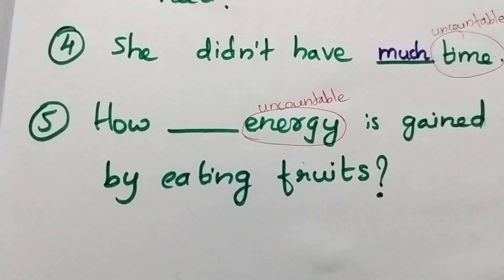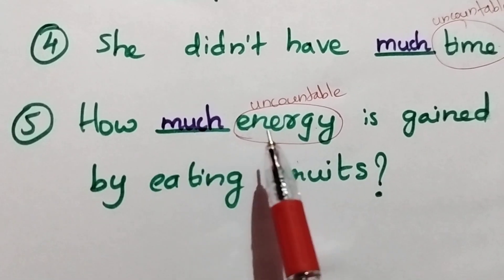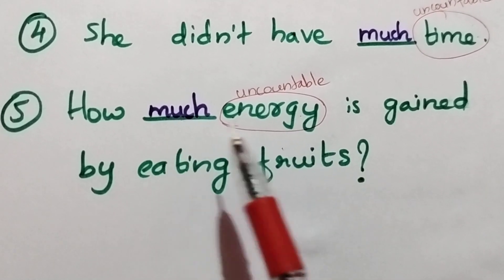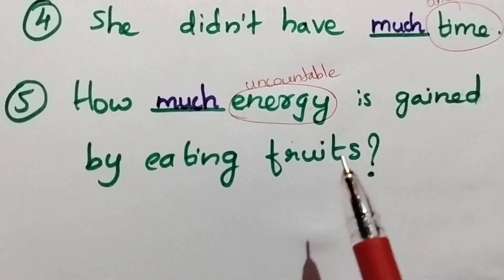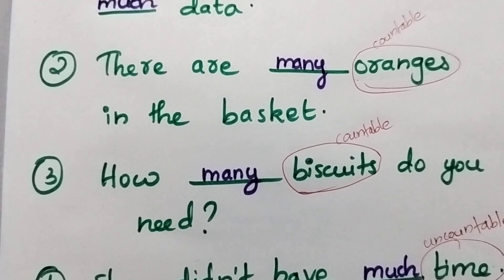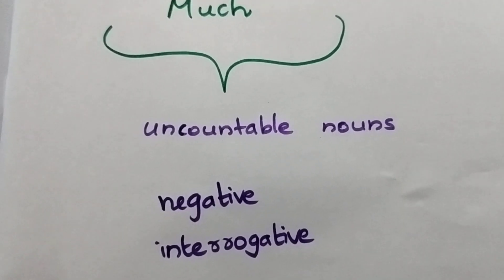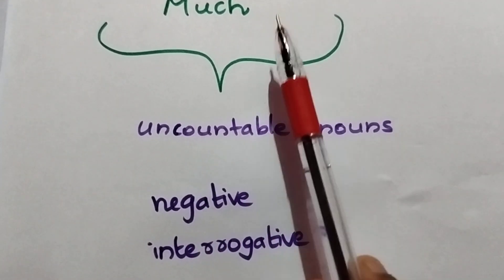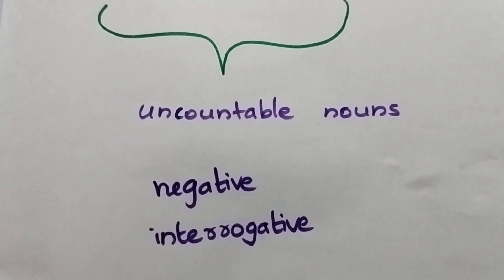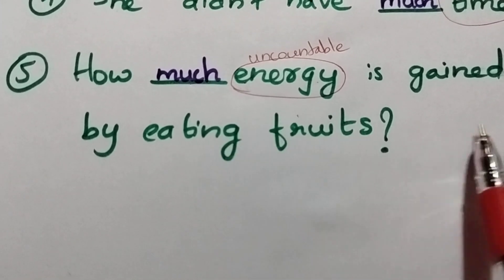Fifth: 'How ___ energy is gained by eating fruits?' Energy is uncountable, so you write 'much': 'How much energy is gained by eating fruits?' This is a simpler way to understand when to use many or much.